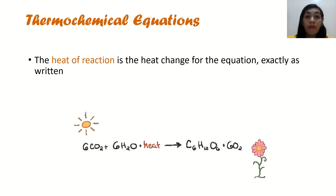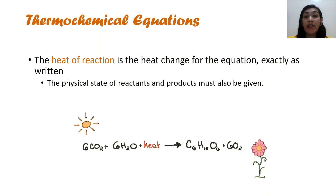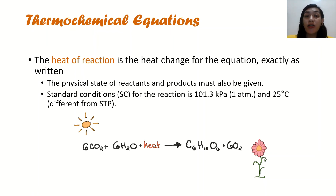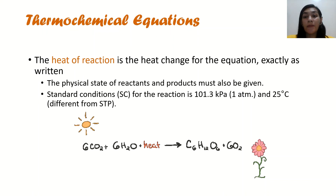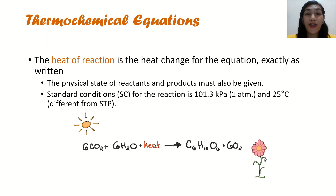In thermochemical equations, we actually see the heat of reaction, which is the heat change for the equation exactly as written. The physical state of reactants and products must be given, and the standard conditions for the reaction are 101.3 kilopascals (1 atmosphere) atmospheric pressure and 25 degrees Celsius. This is different from STP observed in your gas laws. As seen in the equation below, this is your photosynthesis reaction — combining chemistry, physics, and biology.